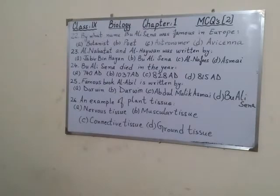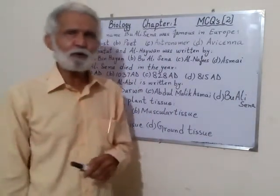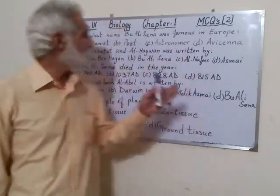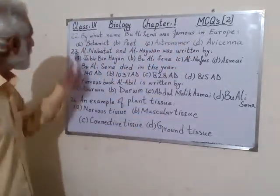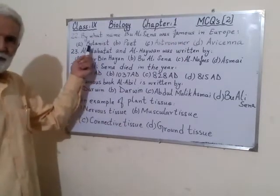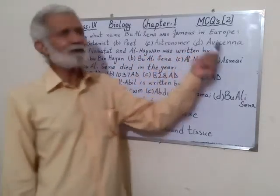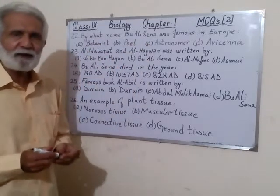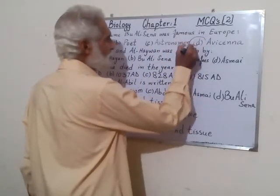Number 22: by what name was Ibn Sina famous in Europe? We know this scientist as Ibn Sina, but in Europe he is known by another name. The choices are botanist, poet, astronomer, or Avicenna. The first three are qualities or professions, not a name. So he was known in Europe by the name Avicenna.